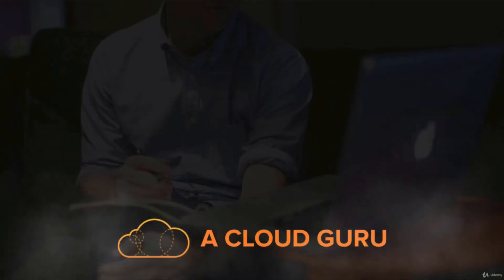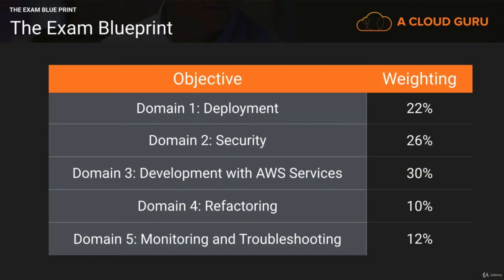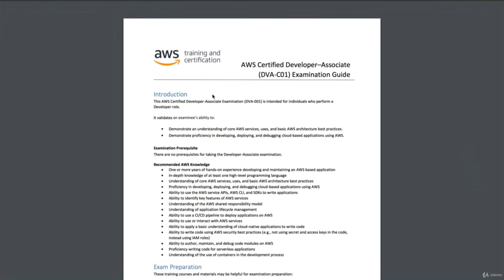Welcome to this lecture. In this lecture, we're going to look at the exam blueprint. Let's get started by looking at the different domains — we have five domains. Domain one is on deployment, worth 22%. Domain two is on security, worth 26%. Domain three is on development with AWS services, worth 30%. Domain four is about refactoring, worth 10%. And domain five is monitoring and troubleshooting. We will put a link to the exam blueprint in the resources section of the course, so go ahead and have a read through this in your own time.